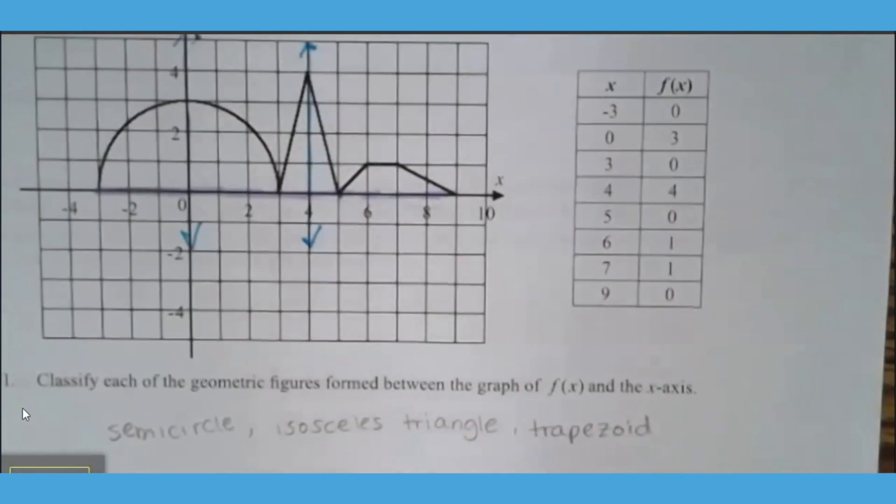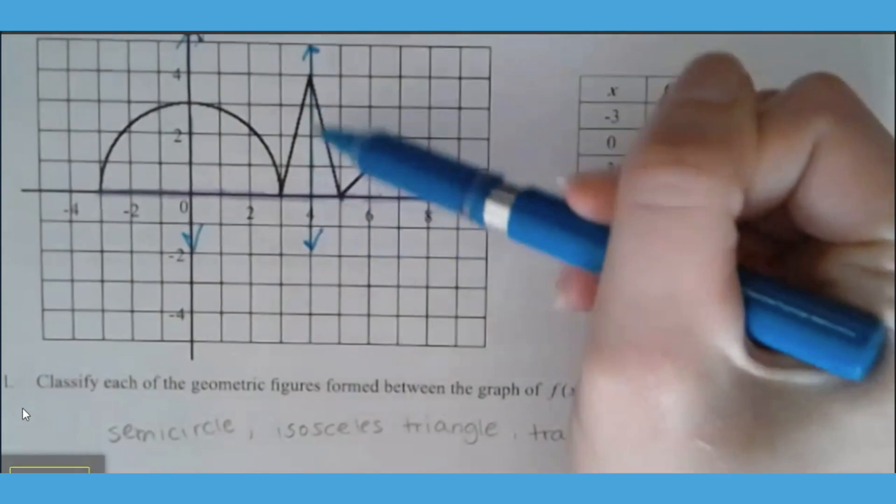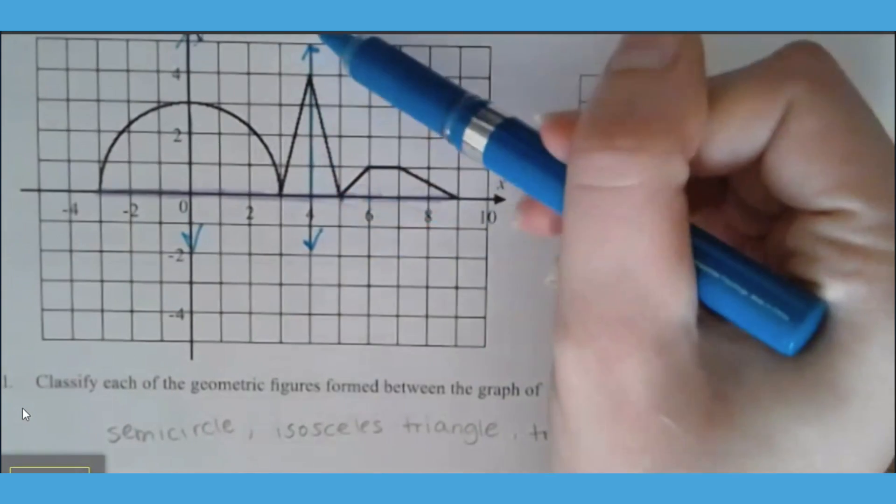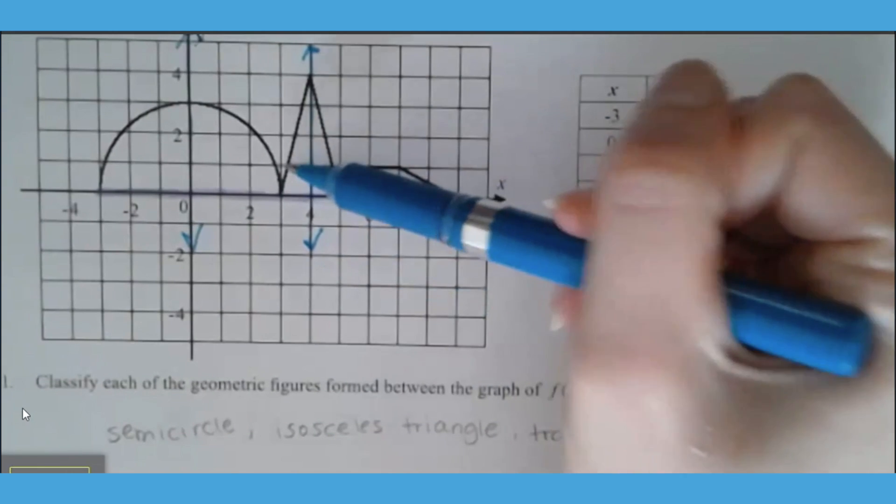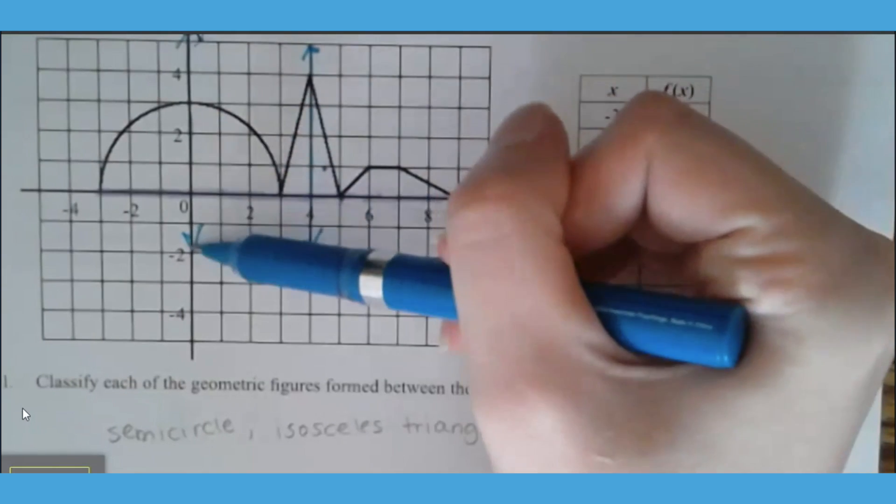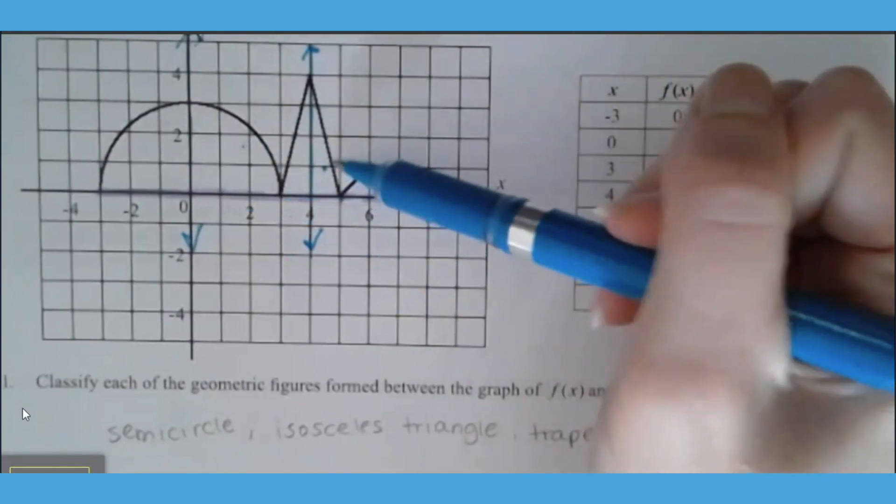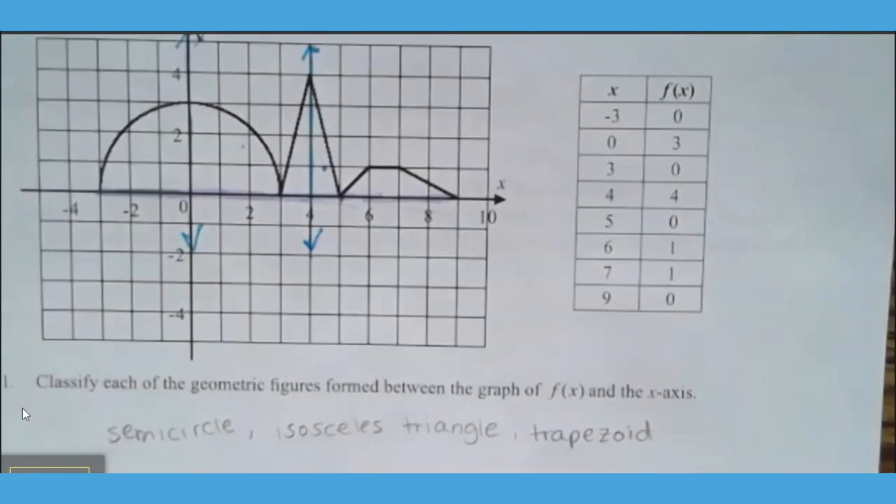So the question 4 asks us, how does this line of symmetry affect the area of this shape? Because it is symmetrical, half is over here, half is over there. Same for the semicircle, it is being cut in half, so those areas are also being cut in half.